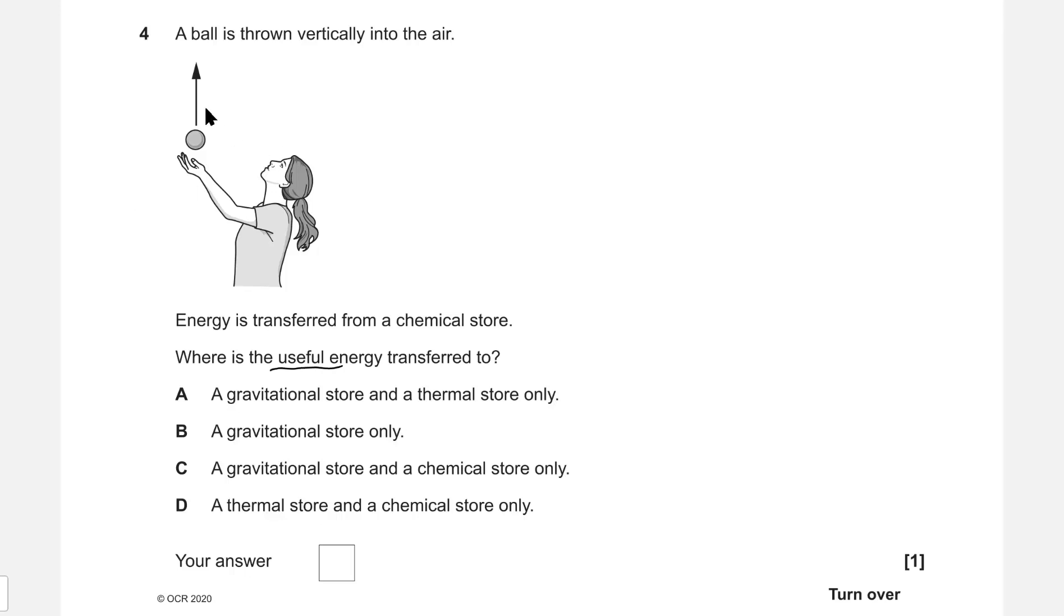If we're throwing the ball up into the air, chances are the useful energy will be just that. Once the ball gains height, the energy right at the top will be purely gravitational potential energy. Therefore, the correct answer is B: gravitational store only.